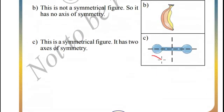Now let us see example C. We can draw two axes of symmetry, one horizontally. When you fold this figure horizontally, both the shapes match. So this is an example of symmetrical object which has two axes of symmetry.